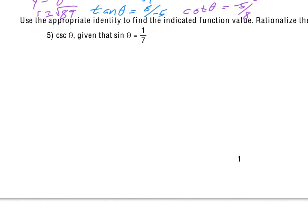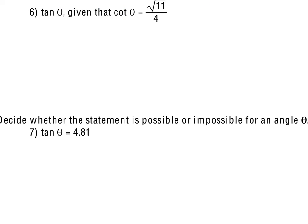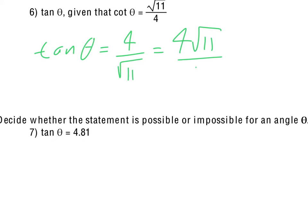For problem number 5, if sine of theta is 1 seventh, then the cosecant is just the reciprocal, so cosecant of theta equals 7. For finding tangent of theta when cotangent is the square root of 11 over 4, the tangent is 4 over the square root of 11. We have to rationalize, so multiplying top and bottom by the square root of 11 gives 4 square roots of 11 over 11.